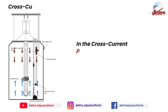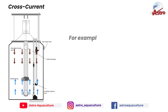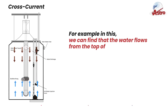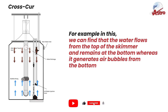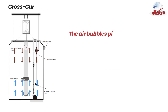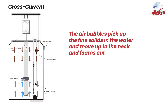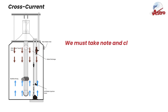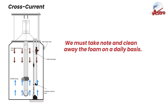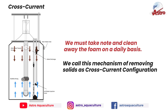In the cross-current protein skimmer, the air bubbles and the water flow are in different directions. The water flows from the top of the skimmer and remains at the bottom, whereas air bubbles are generated from the bottom and move to the top because of their density difference. The air bubbles pick up the fine solids in the water and move up to the neck, foaming out the solid particles. We must clean away the foam on a daily basis. This mechanism of removing solids is called cross-current configuration.